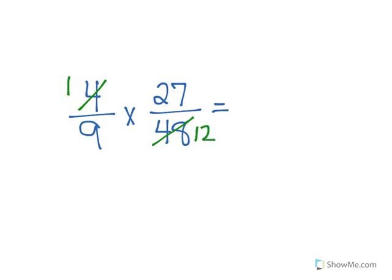48 divided by four is twelve, so that becomes a twelve. Now that doesn't mean I'm done — it's still a lot easier to multiply with these numbers than what I had. Now I'll look at my other numerator: 27. Is there anything that can divide into 27 and 9? Yes — 27 and 9 both have a common factor of 9, so I can divide them both by 9.